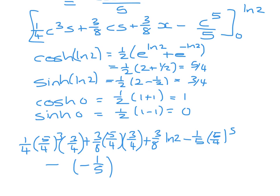Putting all that into the calculator, we get 787 over 2560, plus three eighths ln 2.